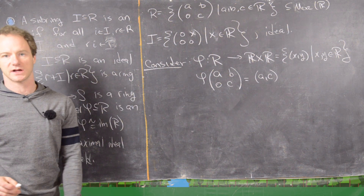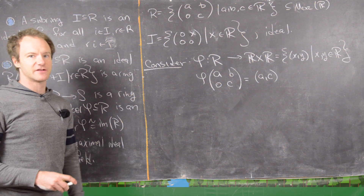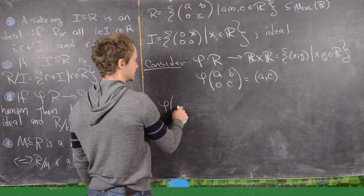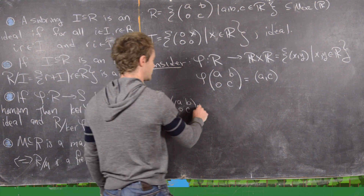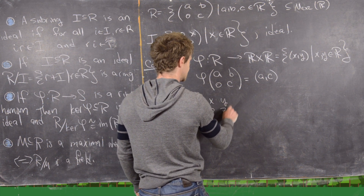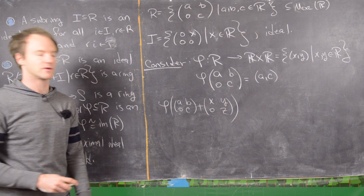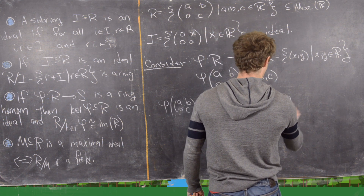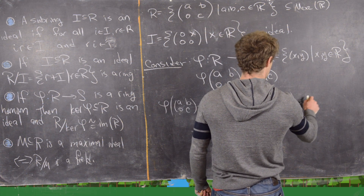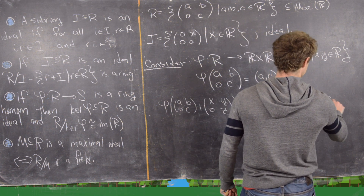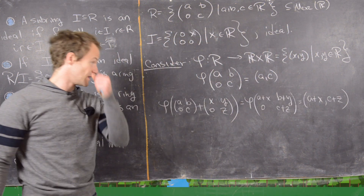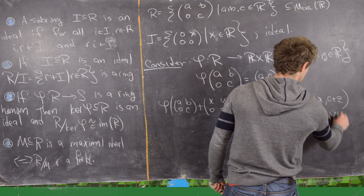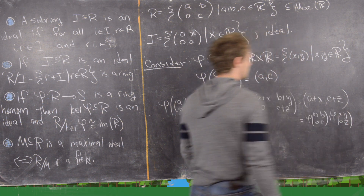We need to check the additive and multiplicative properties for homomorphisms. For the additive property: φ([a,b;0,c] + [x,y;0,z]) = φ([a+x, b+y; 0, c+z]) = (a+x, c+z), which equals φ([a,b;0,c]) + φ([x,y;0,z]). That's what we need.